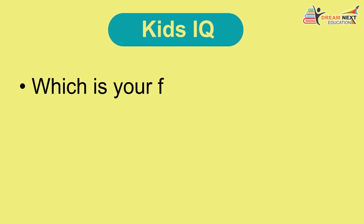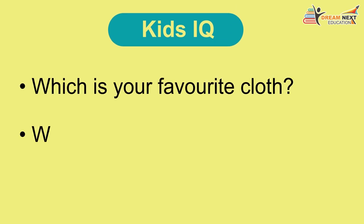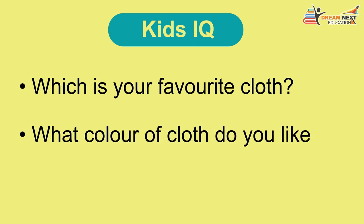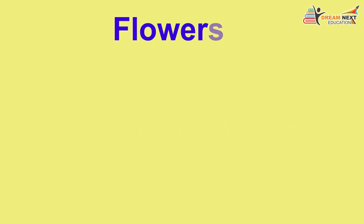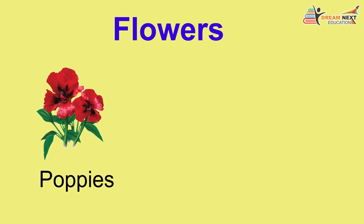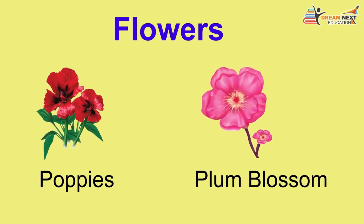Clothes: shirt, half pant, skirt, T-shirt, jeans, frock, sweater, jacket, socks, shoes. Kids IQ: Which is your favorite clothes? What color of clothes do you like to wear most?